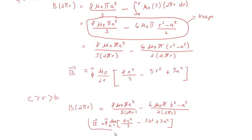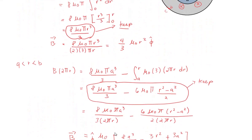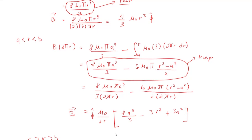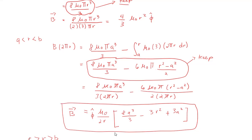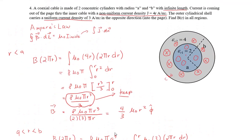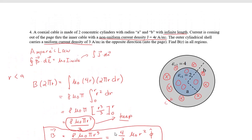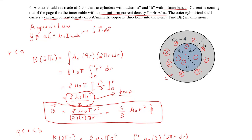That's it. Let's finalize and box our answers. For R < A: B = (4/3)μ₀R². For A < R < B: B = (μ₀/2R)[8A³/3 − 3R² + 3A²]. For B < R < C: B = (μ₀/2R)[8A³/3 − 3B² + 3A²], all in cylindrical coordinates. I hope this problem was clear. If not, you can always ask your TA or professor. Thank you for watching and have a great day.